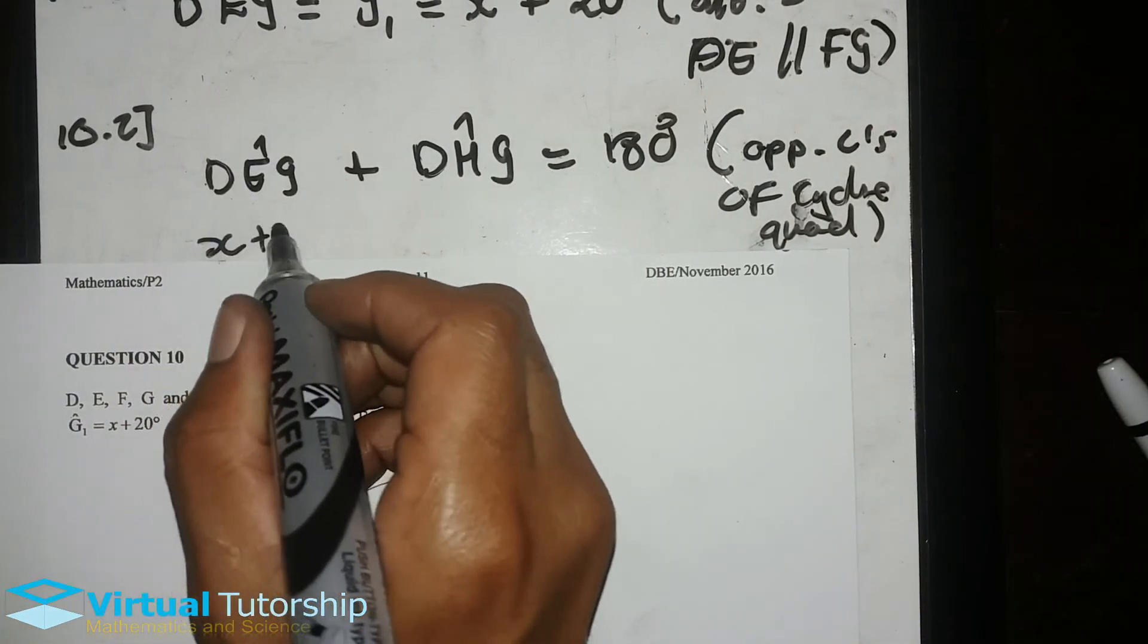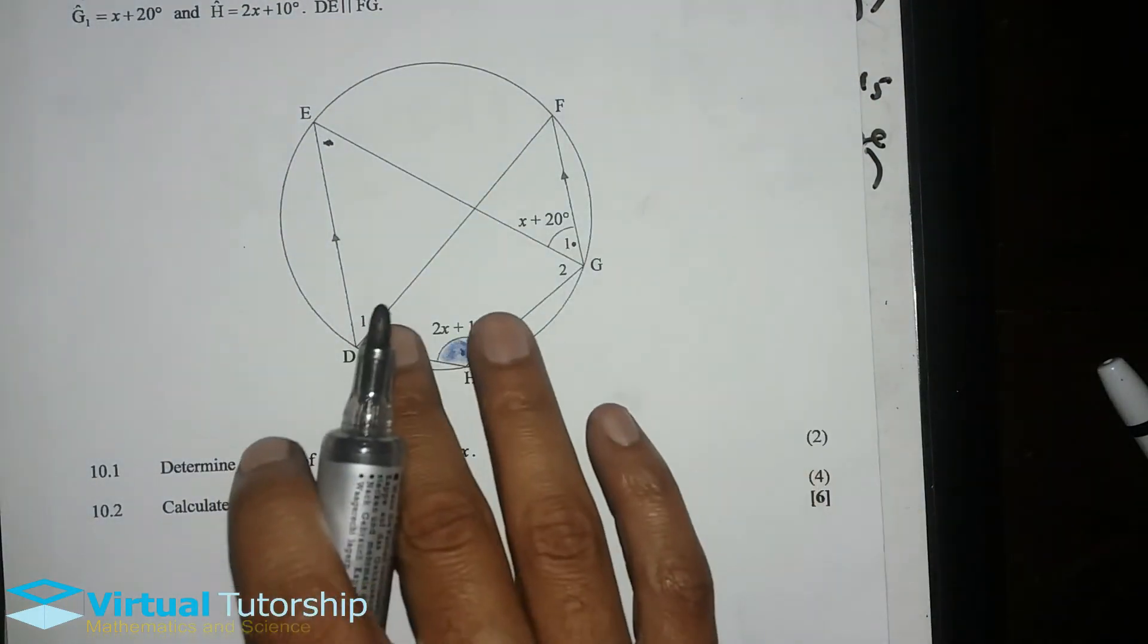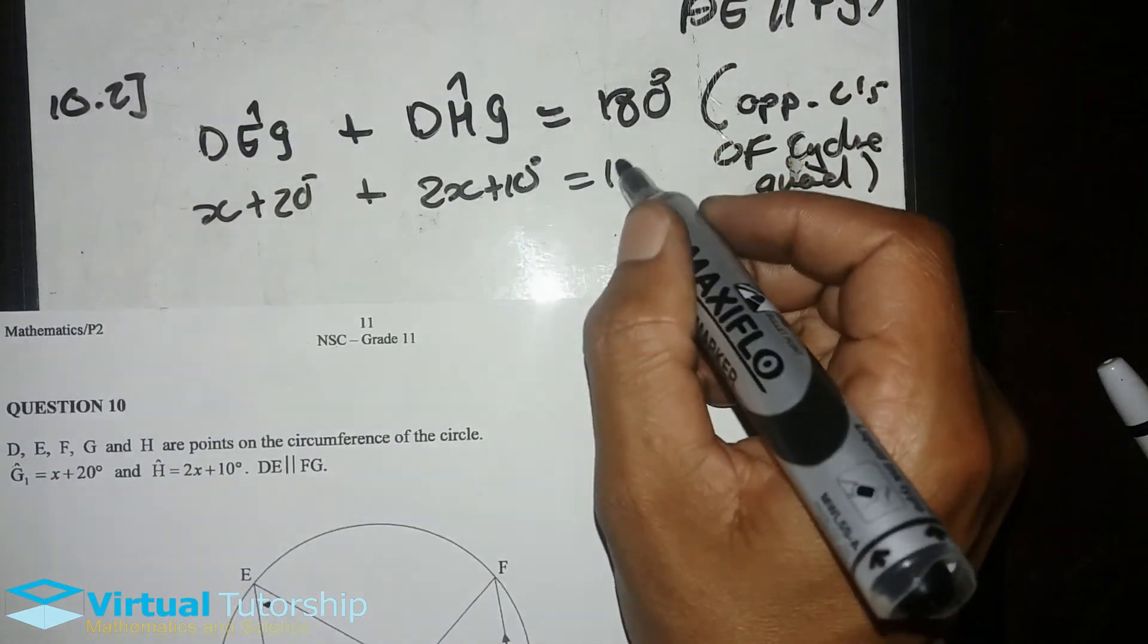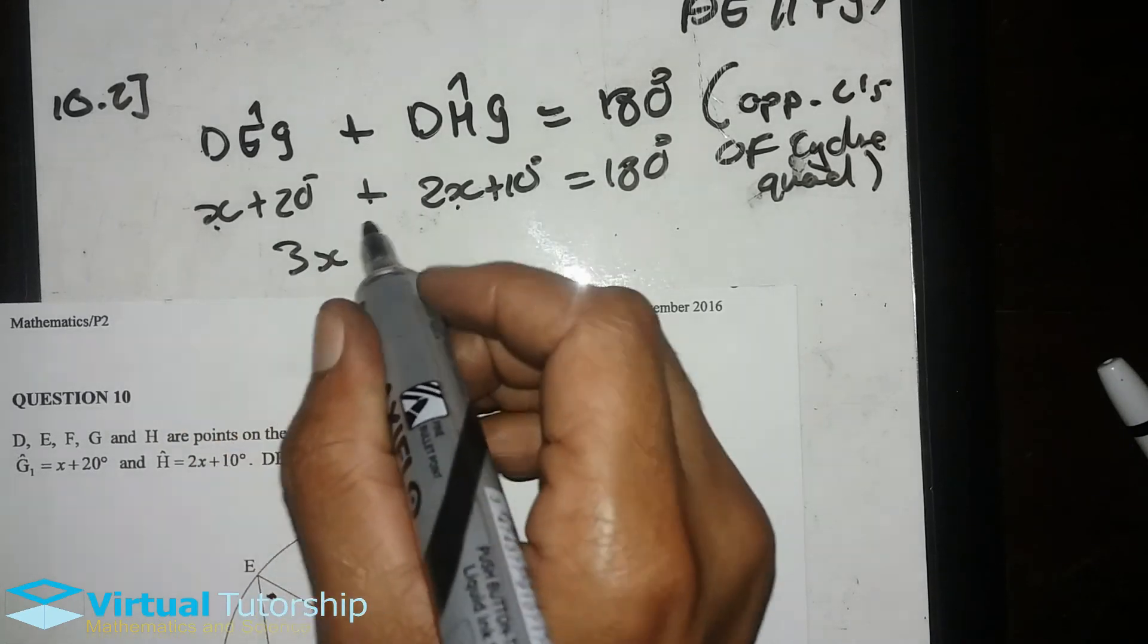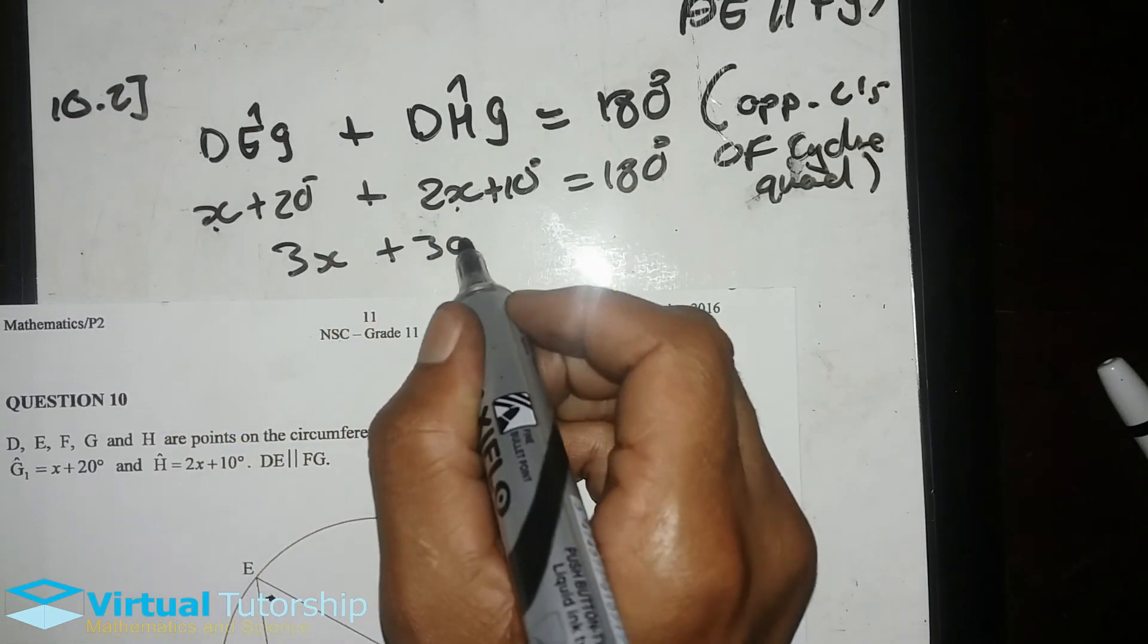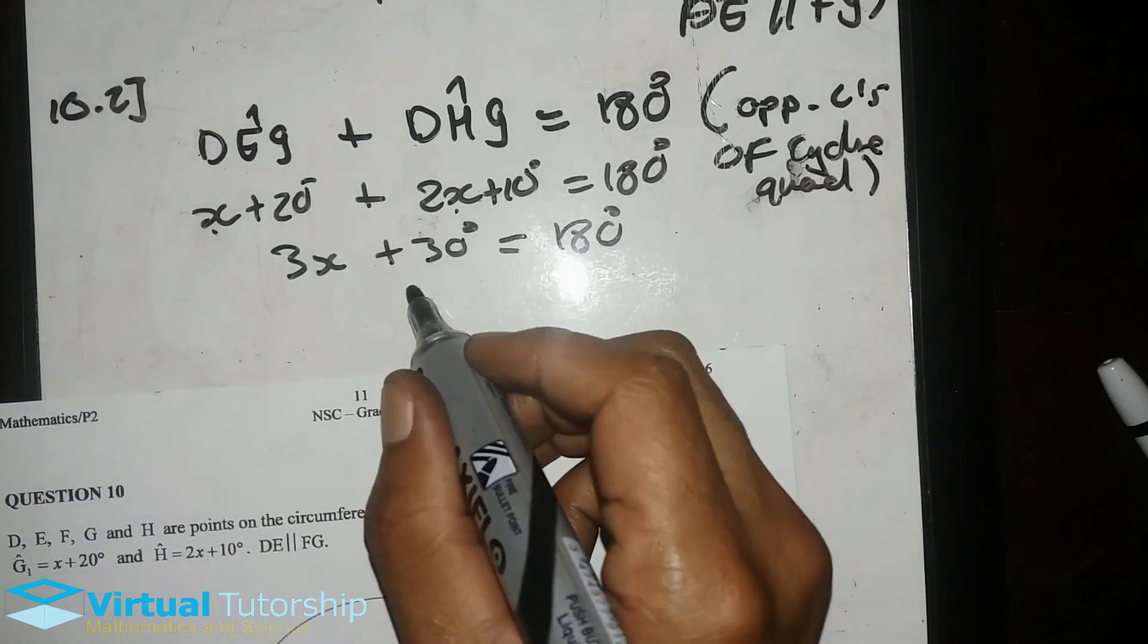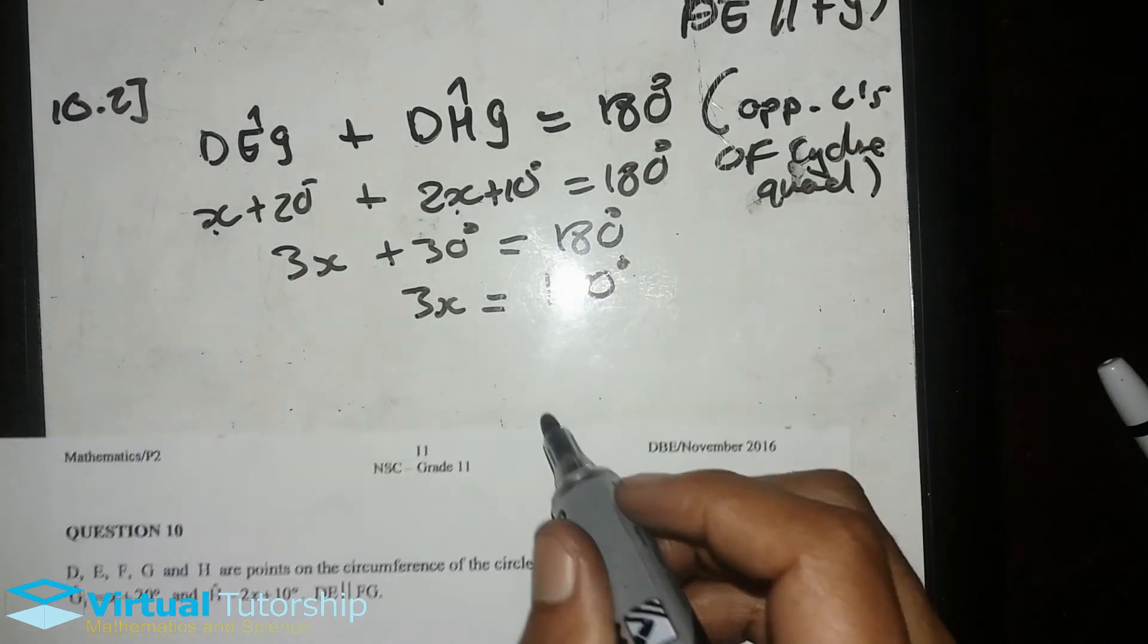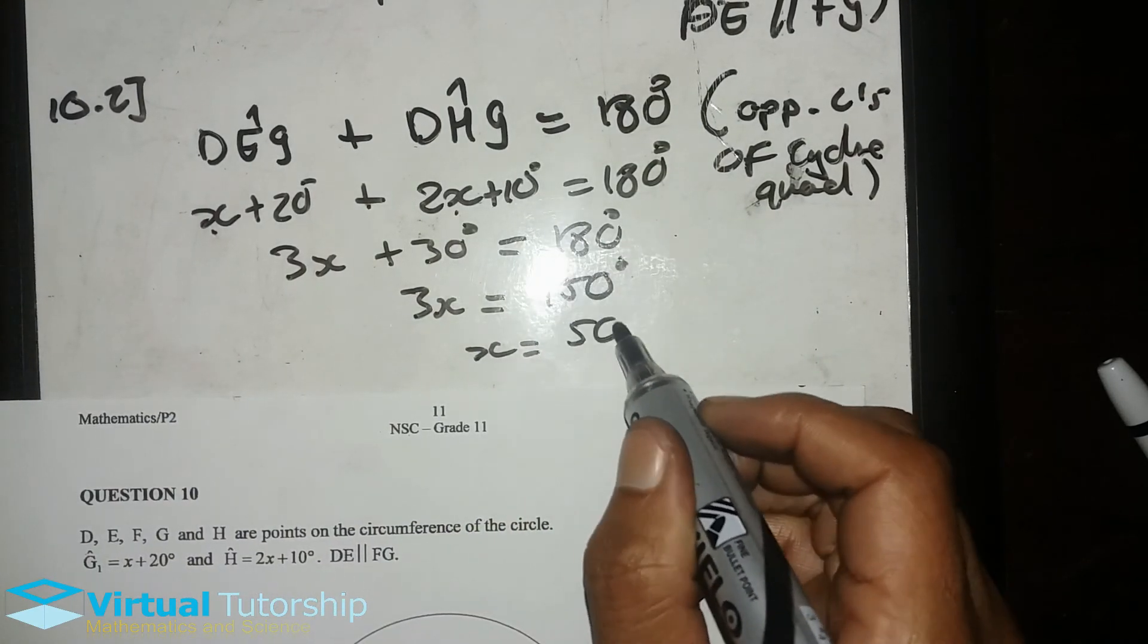DEG is X plus 20 degrees. DHG, it's 2X plus 10 degrees. Equal to 180 degrees. So, X and 2X give 3X, 30 degrees, 180. So, 3X equals 150. And then, X is equal to 50 degrees.